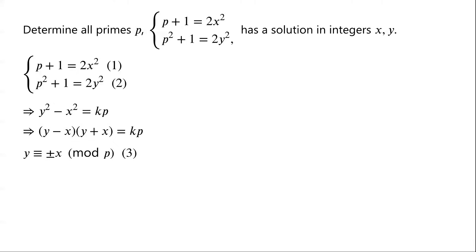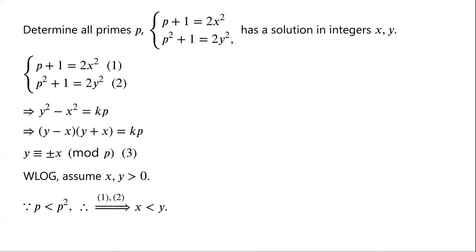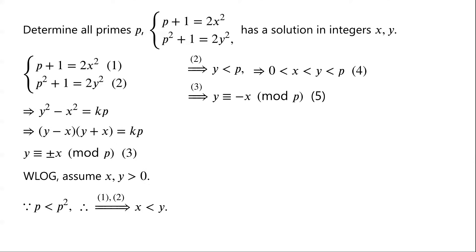This implies that either y is congruent to x modulo p, or y is congruent to negative x modulo p. Without loss of generality we assume x and y are greater than 0. Because p is less than p squared and p is prime, from equations 1 and 2 we know that x is less than y. From equation 2 we know that y is less than p.